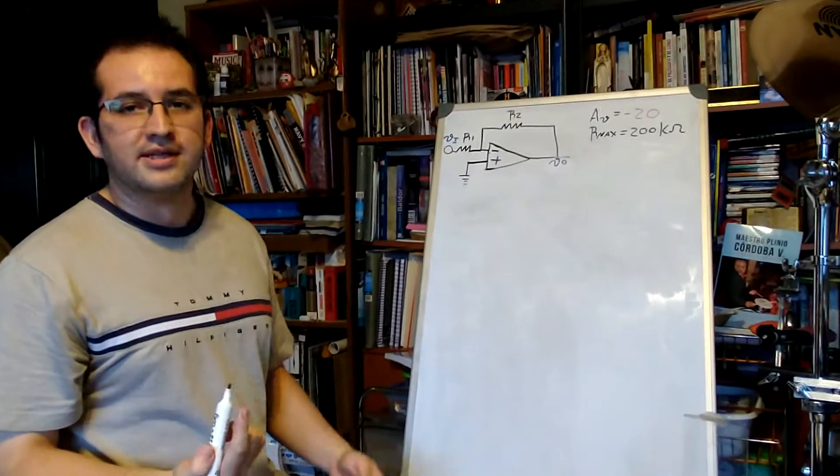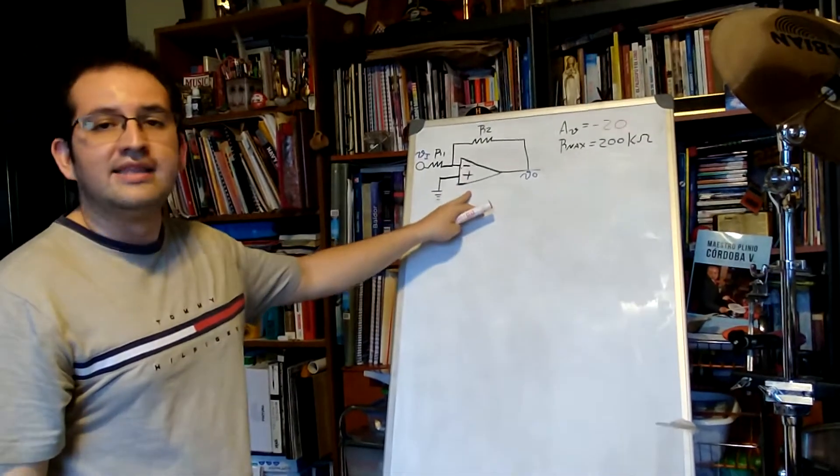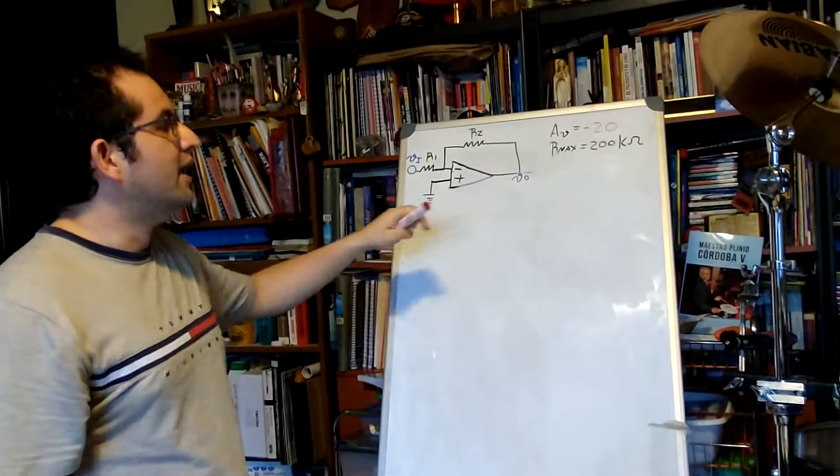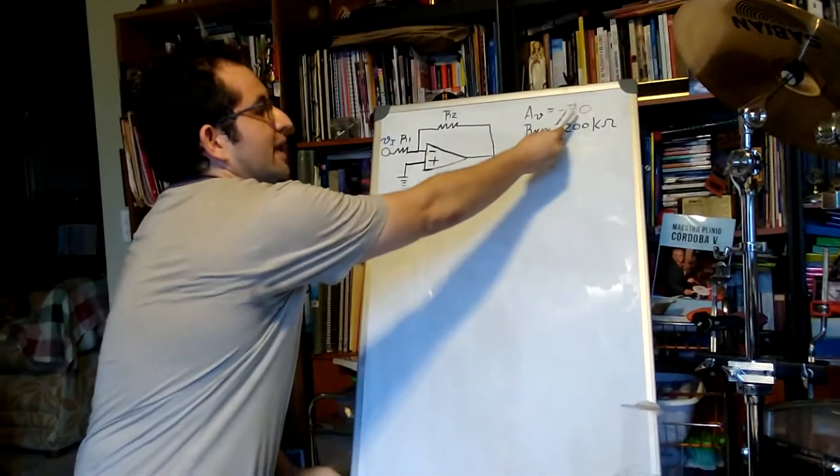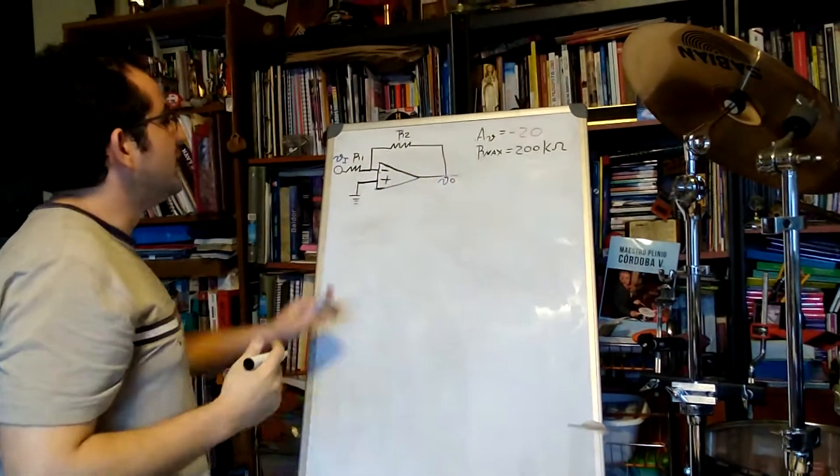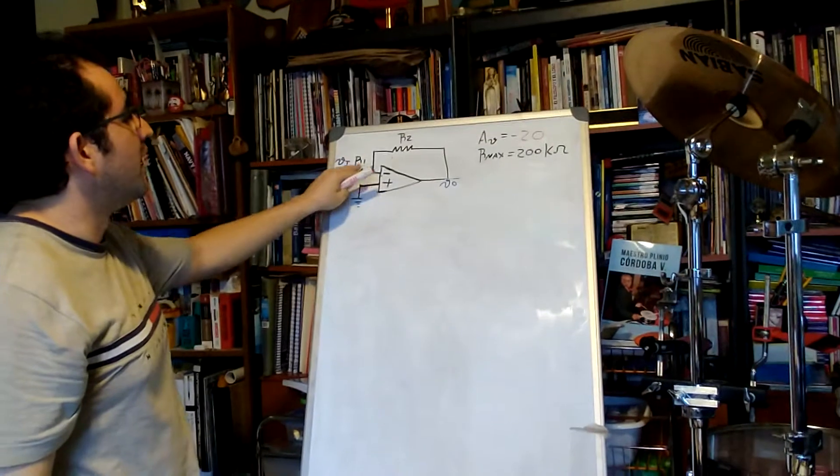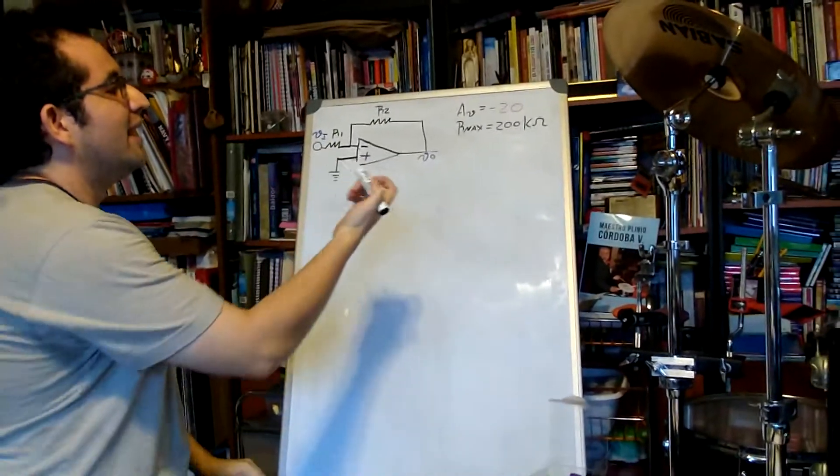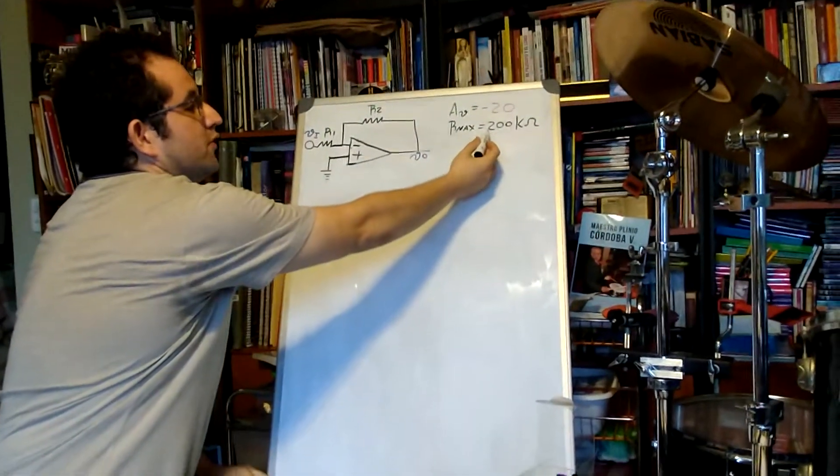So now the equation is different. We have an ideal inverted amplifier and they gave us the gain of negative 20. We need to find the value for R1 and R2, and the Rmax is going to be 200 kilo ohms.